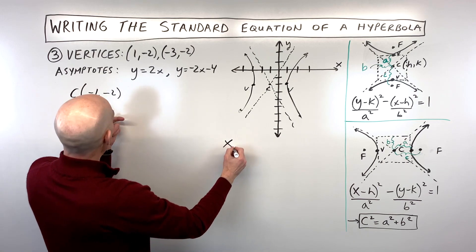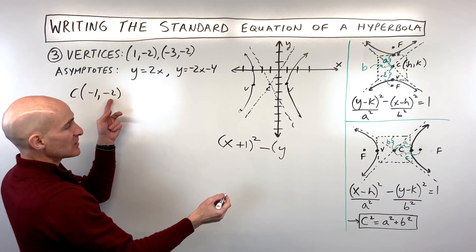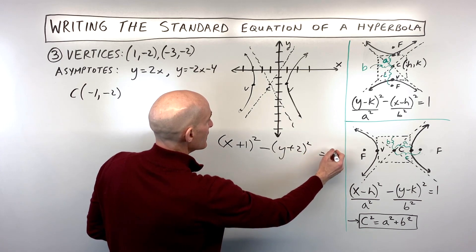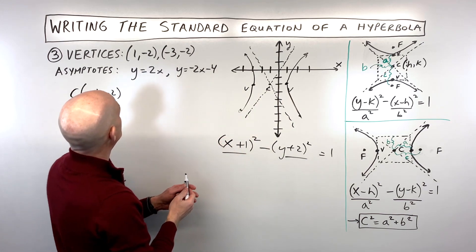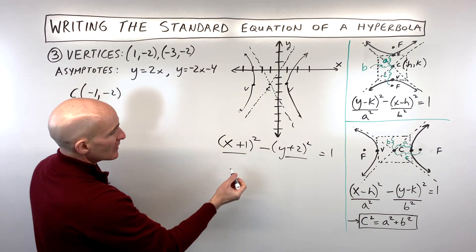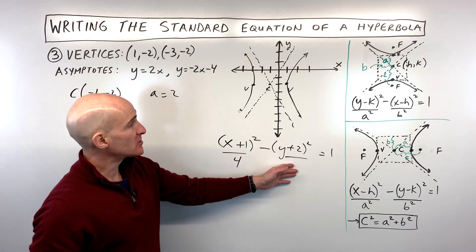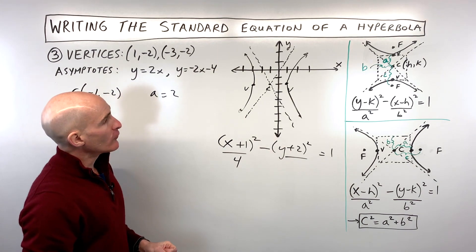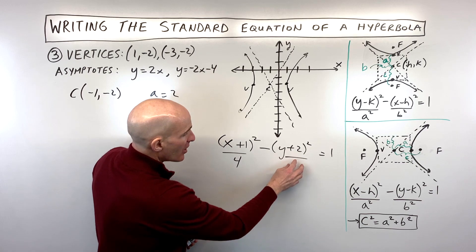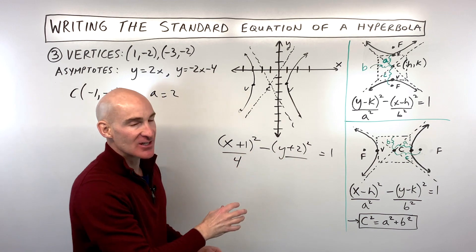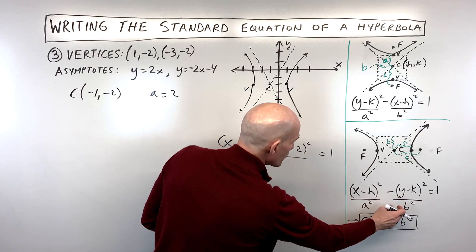Piecing the equation together: the center is (-1, -2), so we have (x - (-1))² over a² minus (y - (-2))² over b² = 1, which is (x+1)²/a² minus (y+2)²/b² = 1. The distance from the center to the vertex is a — that distance is 2 — so a² = 4. Now all that remains is to find b². An important note: for a hyperbola in this form, the slope of the asymptote equals b over a.